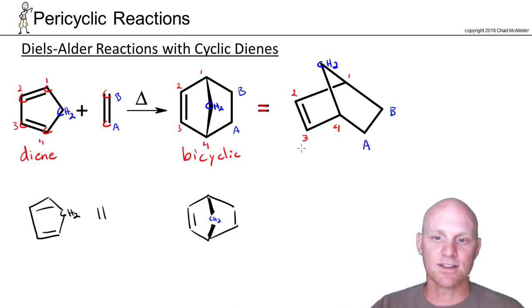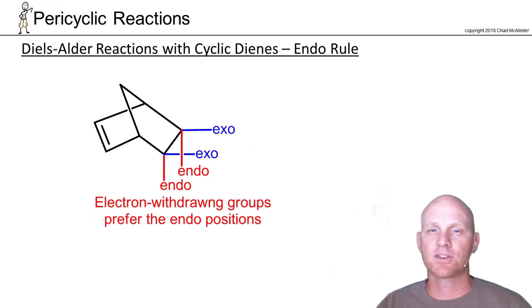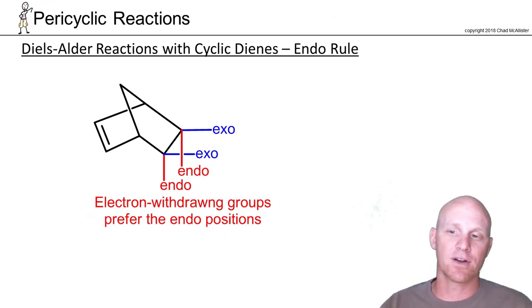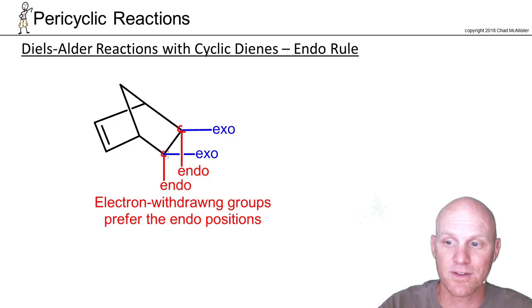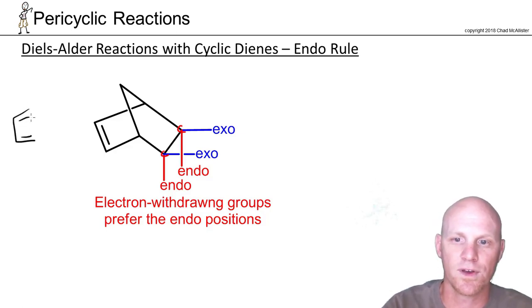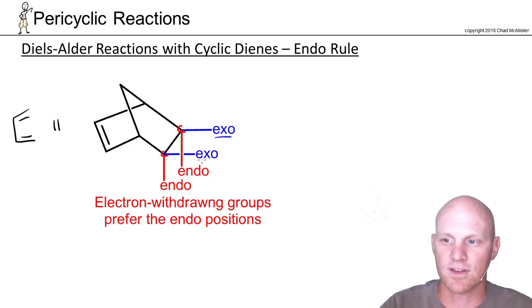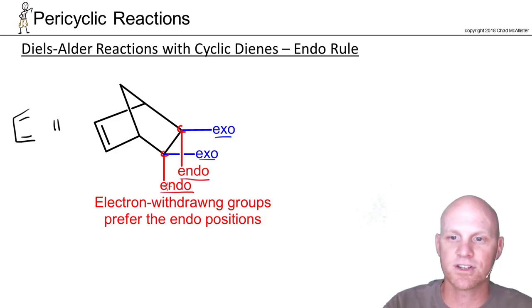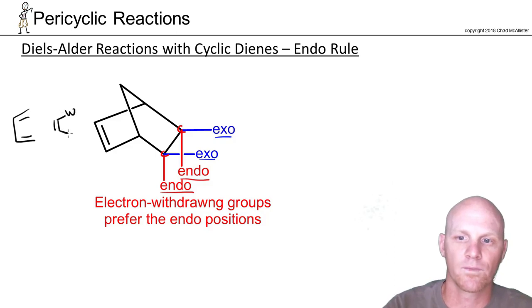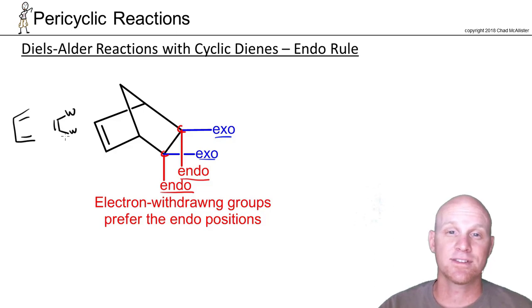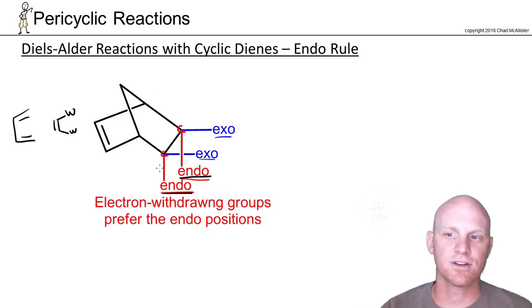When you've got a cyclic diene, you're going to end up with a bicyclic product, and you've got to recognize both ways of drawing it. Now there's one other thing to worry about with forming a bicyclic compound in Diels-Alder, and it involves specifically the two carbons that match up with the dienophile carbons. Those dienophile carbons end up being sp3-hybridized carbons on your ring, and they're going to have two different positions — some we label as exo positions and some as endo positions. Withdrawing groups that activate your dienophile heavily prefer to be in the endo positions, not the exo. So make sure your withdrawing groups, if you have a choice, end up in the endo positions.